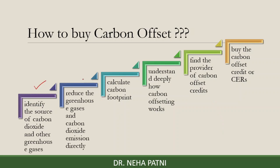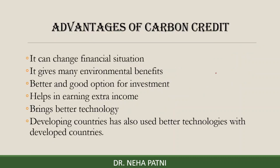To buy a carbon offset: first, identify your source of CO2 emissions, then directly reduce that emission. Calculate your carbon footprint, understand how carbon offsetting works in your area, find a provider of carbon offset credits, and then buy the carbon offset credit from them.